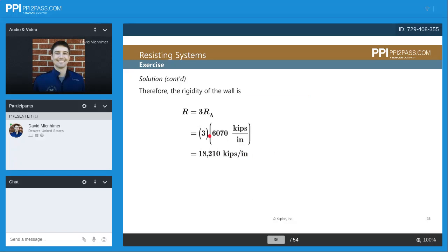The rigidity of the wall is going to be 3 times that rigidity because that was for a single wall there. So 3 times 6,070 is 18,210 kips per inch.